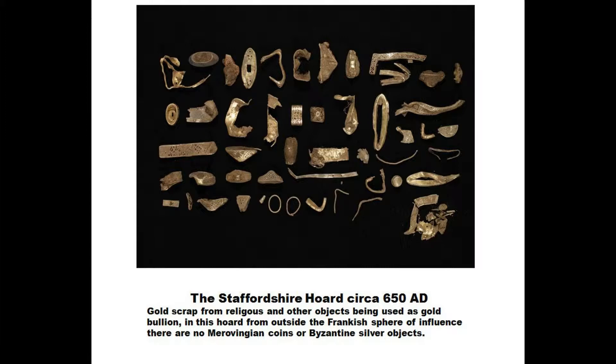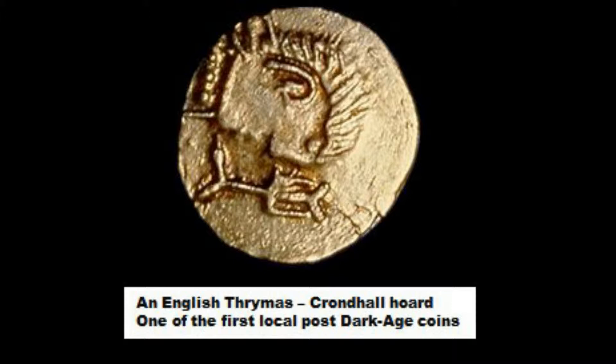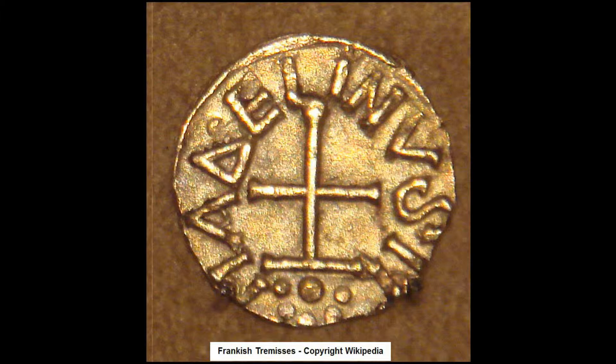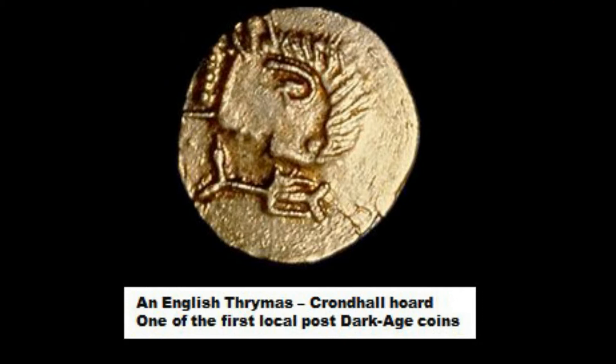The first British gold coins to be minted since the end of the Roman occupation date from around 600 AD. These coins were copies of the Merovingian gold coins that they are often found with — they have the same shape, mass and purity. The English versions are referred to as Thrymassises.